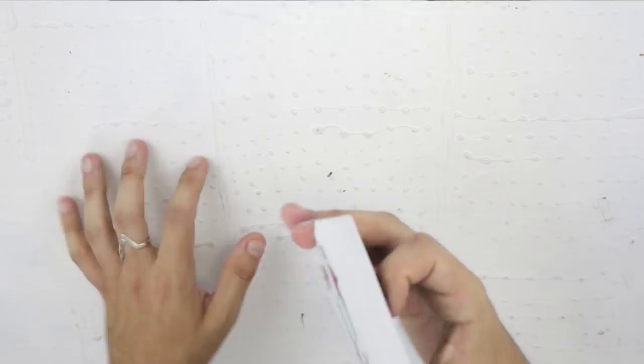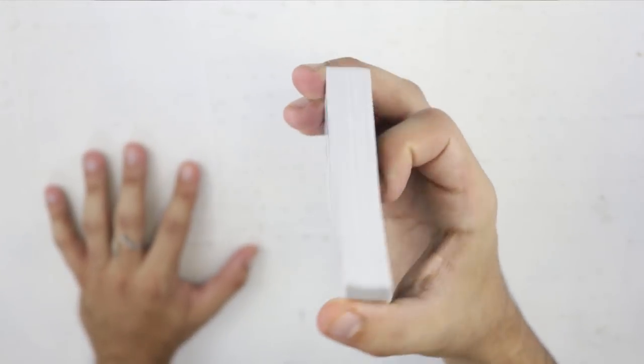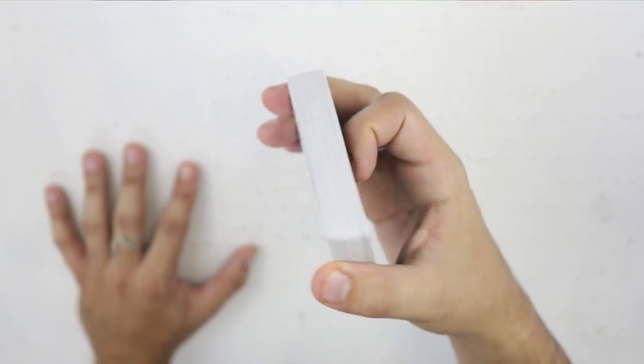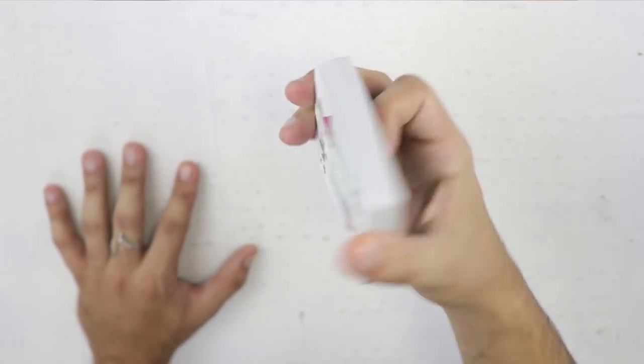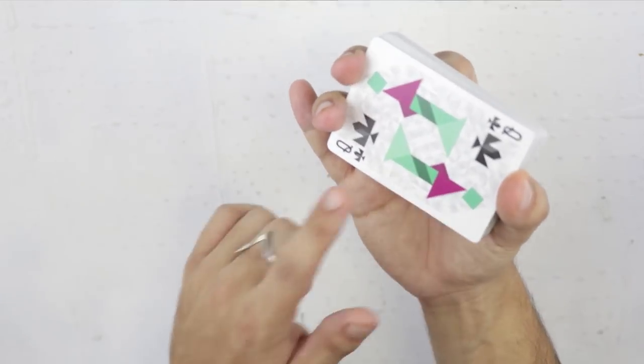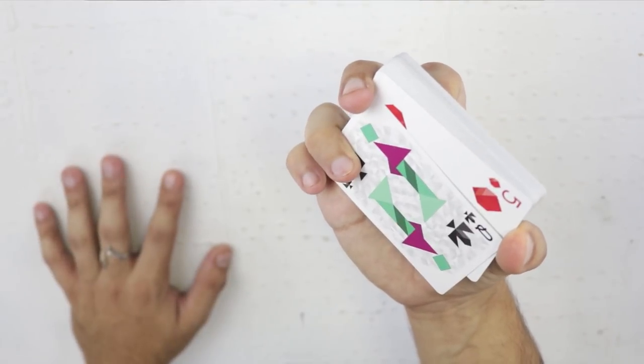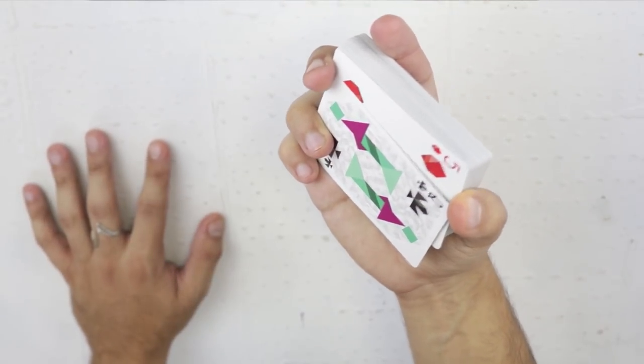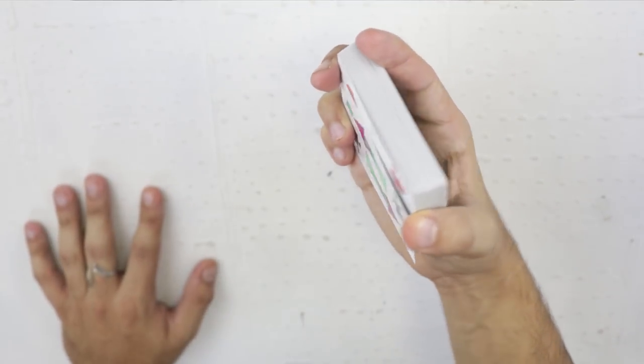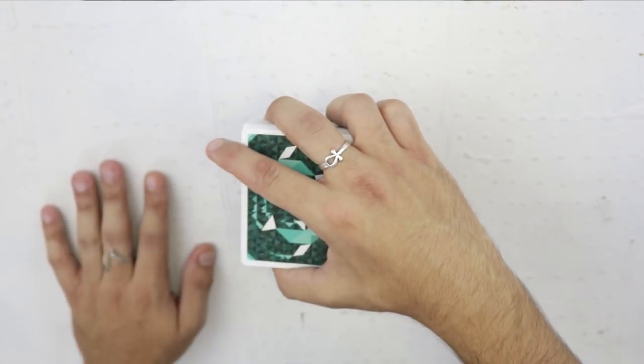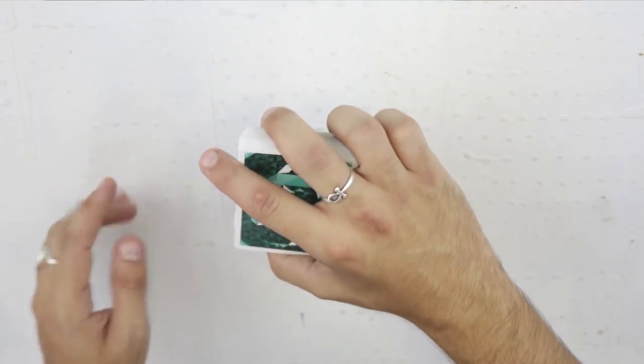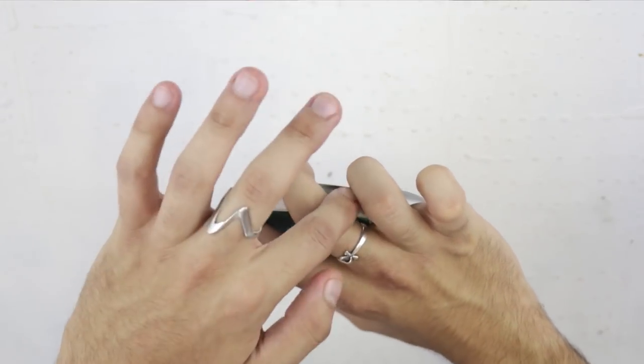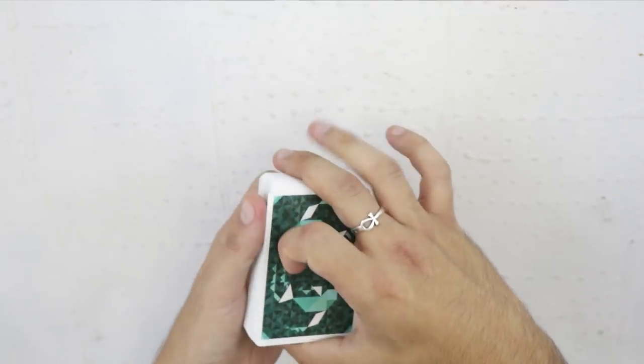So just a little bit of the mechanics here guys. You're going to hold the deck in this sort of grip in your right hand, in biddle grip as they say. And what's going to happen is that you're going to use your ring finger here to press down on the face of this bottom card. See that? What that's going to do is that's going to separate that bottom card significantly from the rest of the deck and that's what's going to allow you to do the move.